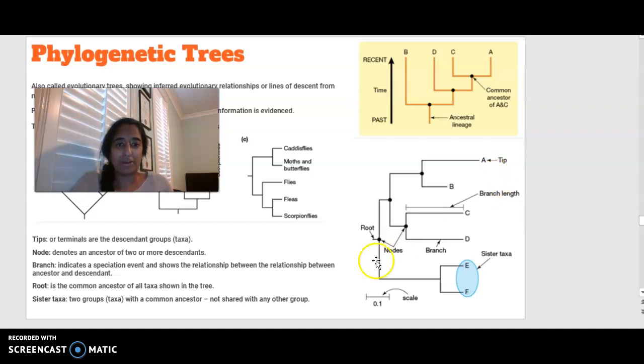Where we have a node, so these little circly bits, they are going to denote an ancestor, a common ancestor of two or more descendants. So remember, descendants are the organisms that are coming off of the original. Branch indicates the speciation event and shows the relationship between the ancestor and the descendants. So this thing over here, these lines, they are called branches.